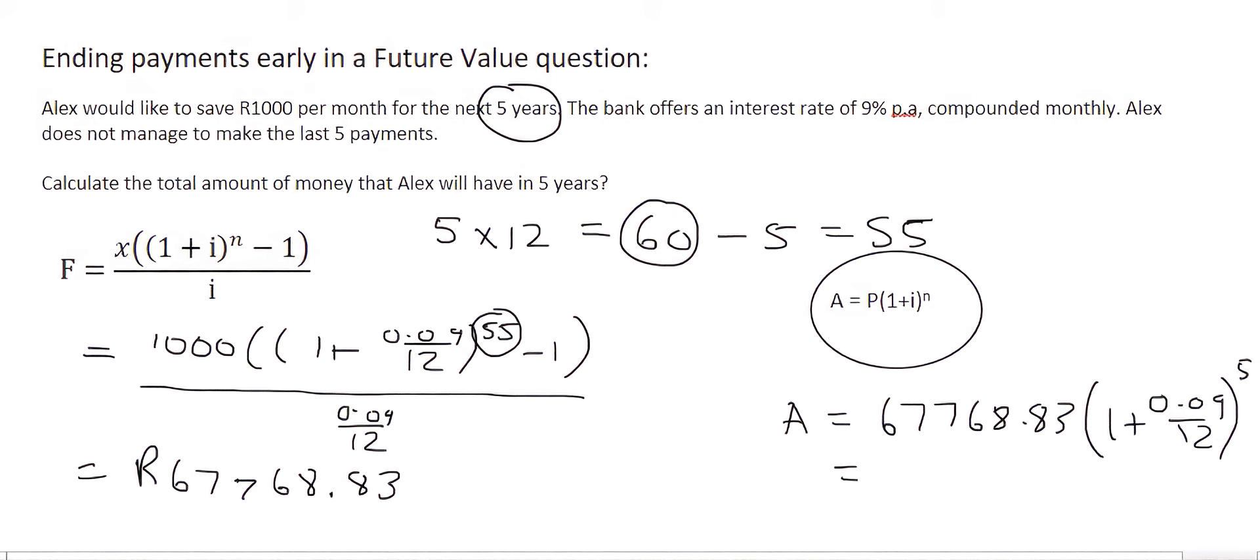And if you put all of that in on the calculator, you get a final answer of 70,348.57. So the main thing that we need to understand about this type of question is once you have stopped paying, your money still stays in the bank until the end date. And so while it is in that bank, it's still going to earn interest. So it's not going to grow as fast as it would if Alex continued to pay, but it's still going to be in the bank and so it's still going to earn a little bit of interest.